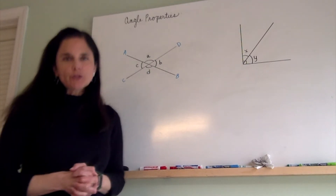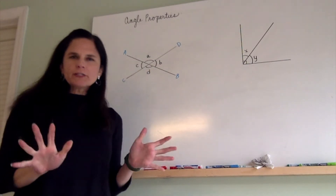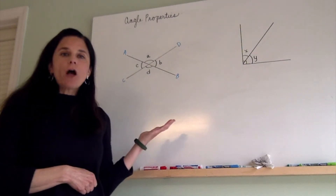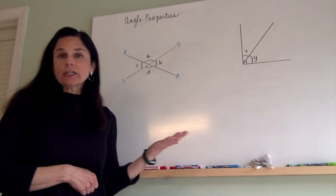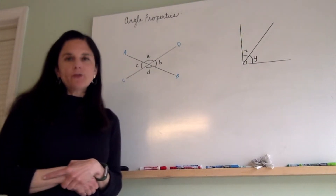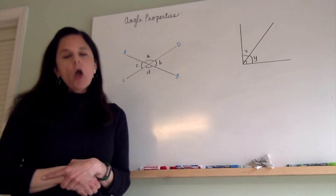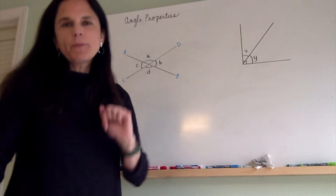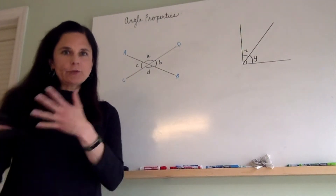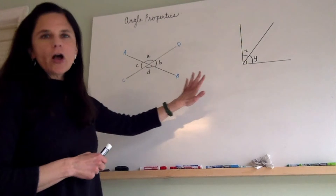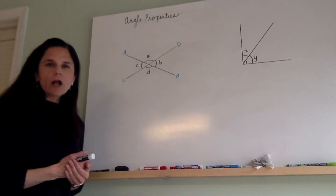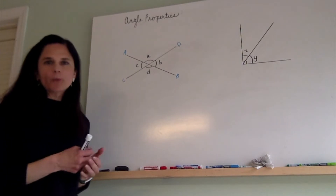If you'll remember, we did a unit on geometry, maybe right before Christmas — I believe it would have been book A — where we learned about the properties of angles on a line, different lines, and intersecting lines, and we used those properties to find unknown angles. I'm going to review that today because we'll be using those properties again in relation to triangles. I have a couple of figures drawn on the board here and I want to go over these properties to help you remember.